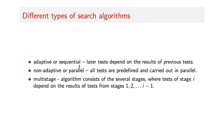We can consider different types of search algorithms. The first type is adaptive or sequential algorithms, where later tests can depend on the results of previous tests — we do some tests, observe the results, and decide which coins to test next. The second type is non-adaptive or parallel algorithms, where all tests must be predefined; the advantage is that all tests can be carried out in parallel. We can also consider multi-stage algorithms, which consist of several stages. The number of stages is usually small, and tests inside one stage are independent, but they can depend on results from previous stages.